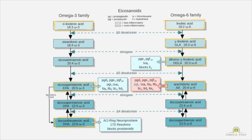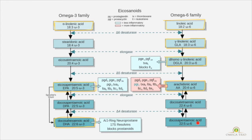In the omega-6 family, we start with linoleic acid — 18 carbons, two double bonds. It gets acted on by delta-6 desaturase, an enzyme that adds double bonds. So linoleic acid with two double bonds becomes GLA — gamma-linolenic acid — with three double bonds. It then elongates, adding carbons, and becomes DGLA — dihomo-gamma-linolenic acid — with 20 carbons and still three double bonds. The process continues and arachidonic acid has 20 carbons and four double bonds. All of these are part of the omega-6 family.